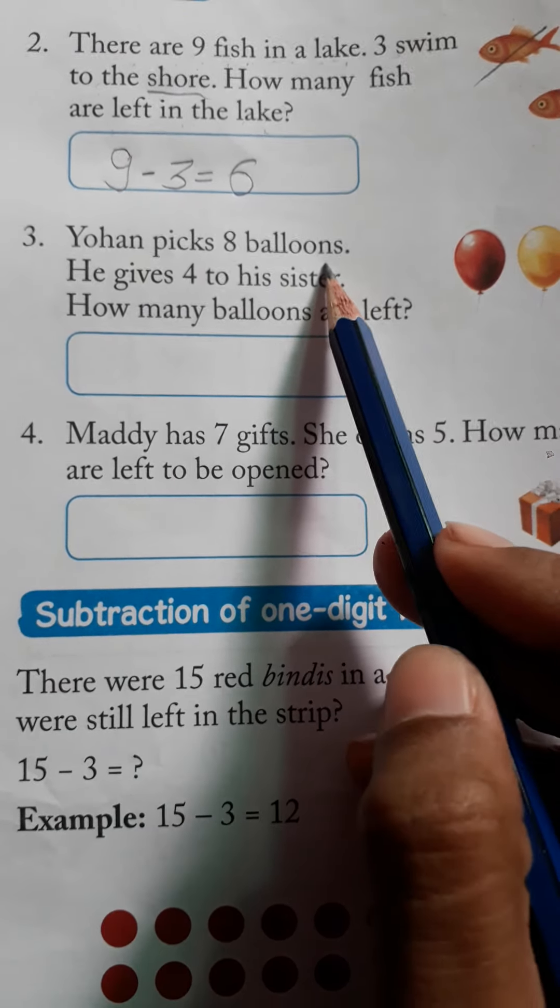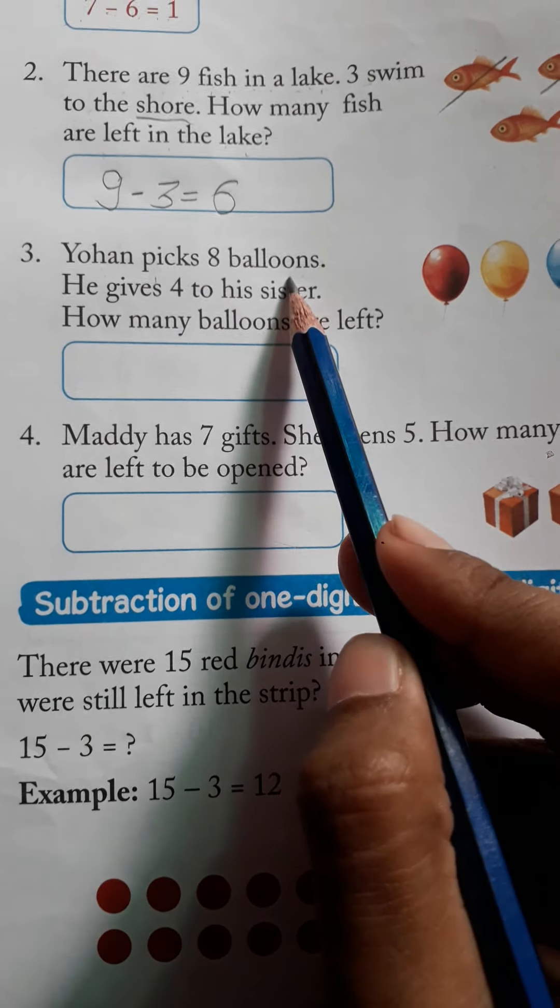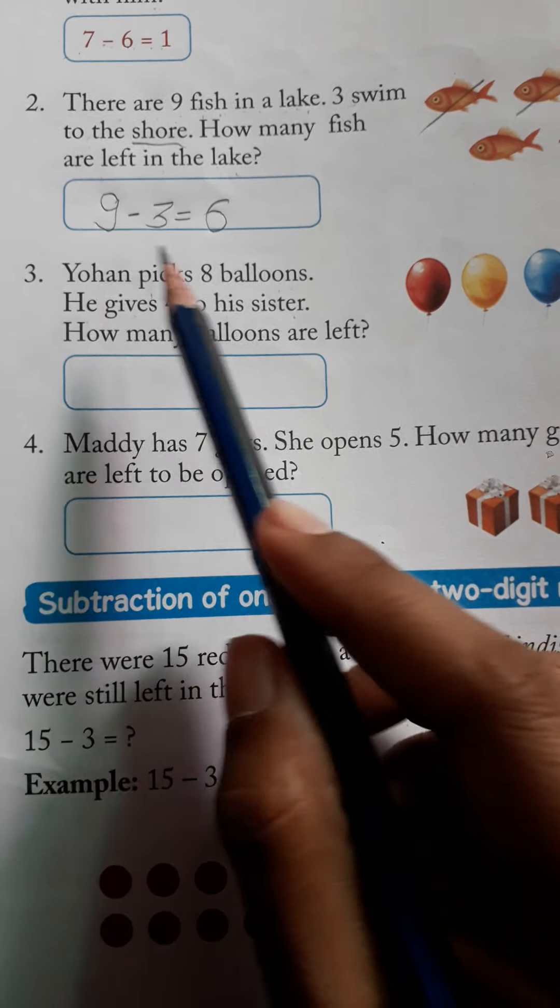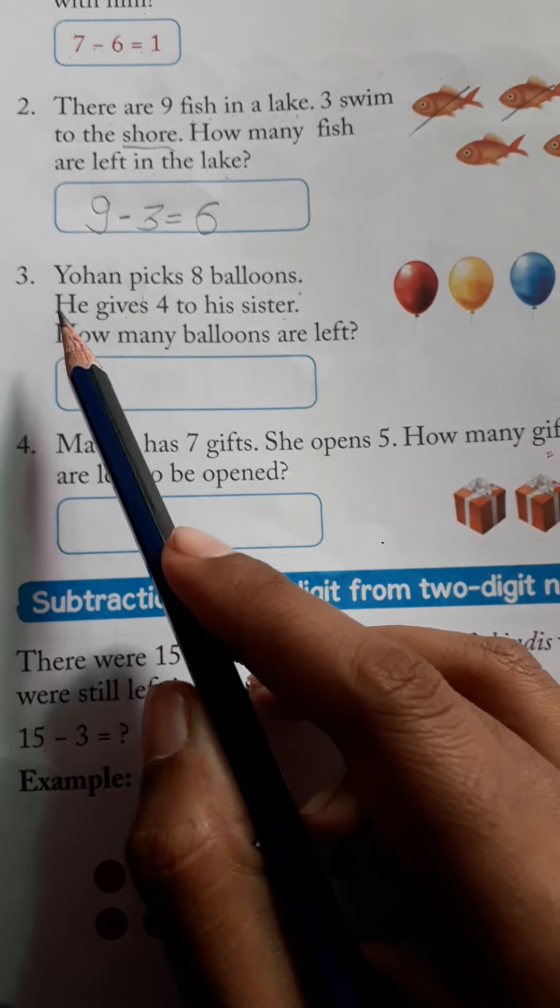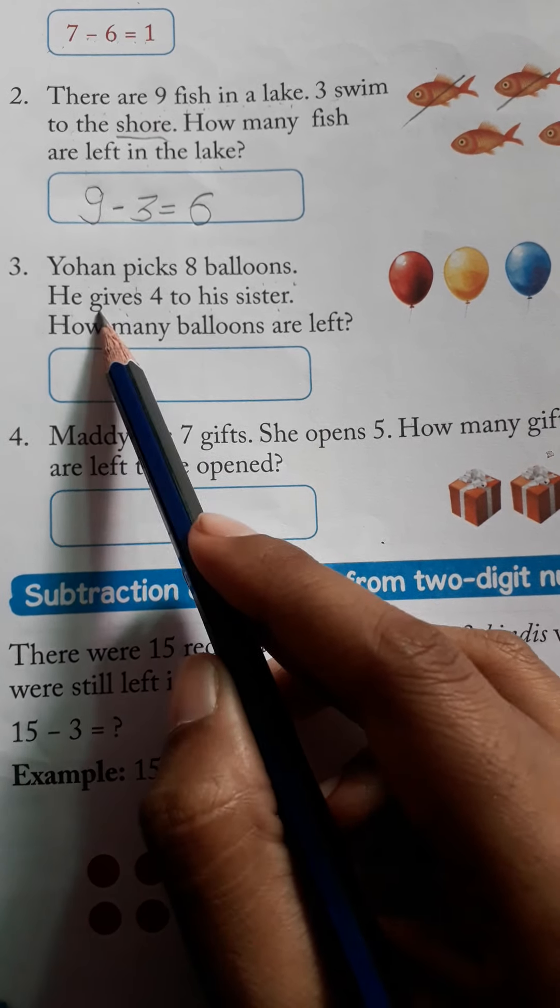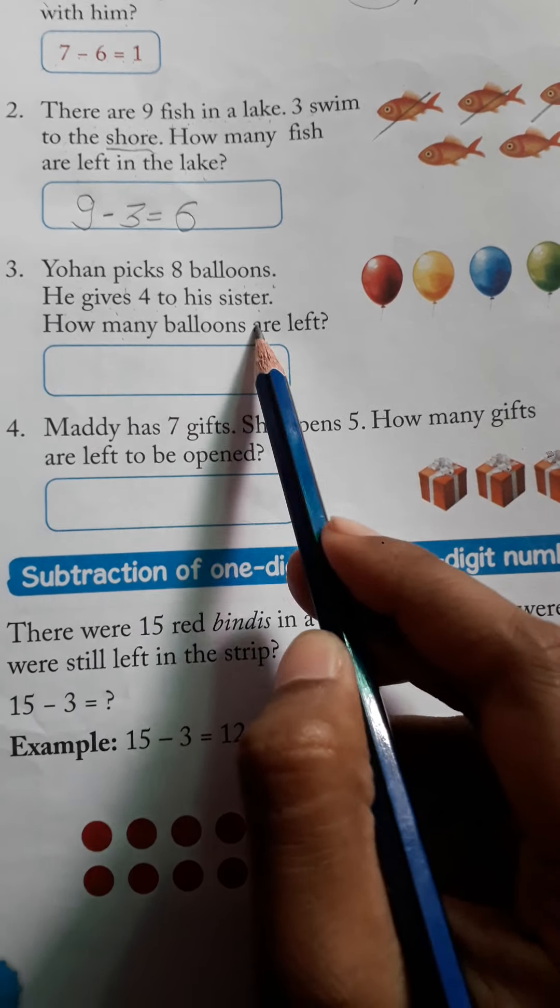Johan picks 8 balloons. Pick means to take. Johan picks 8 balloons, he gives 4 to his sister. Johan picked 8 balloons, and out of those he gives 4 to his sister. So how many balloons are left?